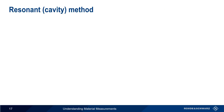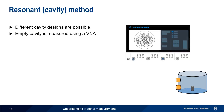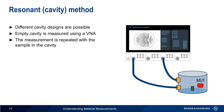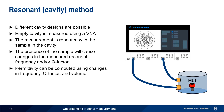The resonant cavity method is almost the opposite of the free space method. Instead of placing the sample out in the open, we enclose it in a specially designed cavity or container — note that there are many possible cavity shapes and designs. We start by measuring the empty cavity with our vector network analyzer, then repeat the measurement with the sample in the cavity. The presence of the sample will cause changes in the measured resonant frequency and/or something called the Q or quality factor. Permittivity can then be computed using changes in frequency, Q factor, and volume. Note that the resonant cavity method does not require a separate calibration step.